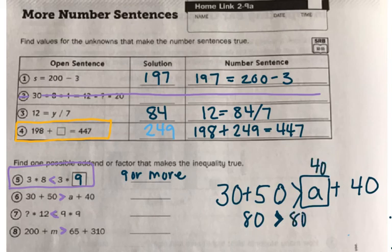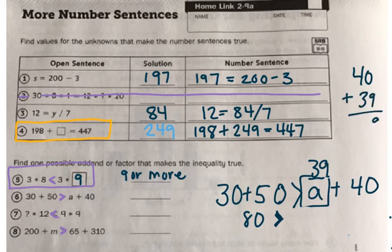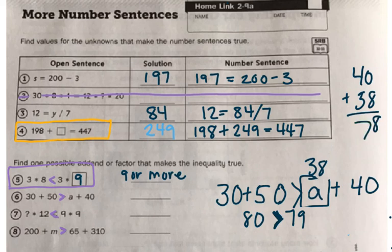So if I put 40 here, 40 plus 40 would be 80 and that's not greater than 80, it's equal to. So my number over here has to be one less than 30, not the one less than 40, which would be 39. Let me show you why. 39 plus 40 is 79. And is 80 greater than 79? Absolutely. I could put 38 there. If I put 38 there, 38 plus 40 would be 78. And is 80 greater than 78? Absolutely. So I could put anything that's 39 or less here.